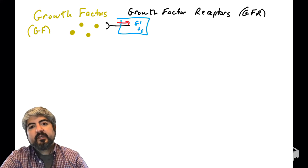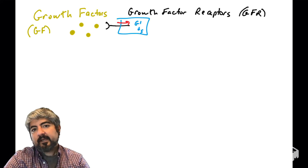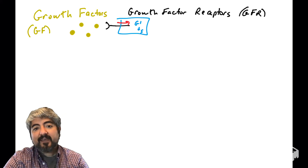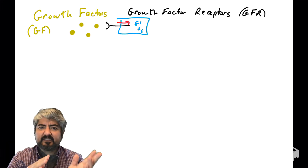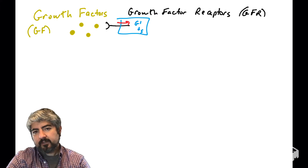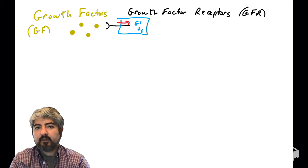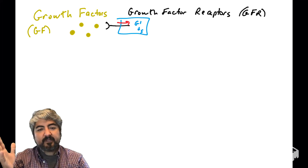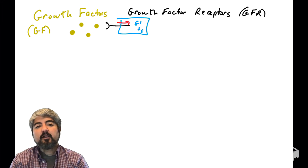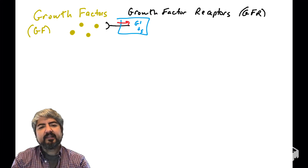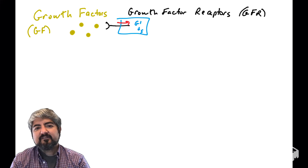In the previous video we spoke about growth factors and growth factor receptors. Growth factor receptors are proteins found on the surface of many human cells, and when those receptors bind their ligand — the growth factor — that sends a signal into the cell to tell it to go from the G1 phase into the S phase. The purpose of this video is to talk about how growth factor receptors work.